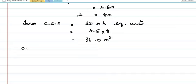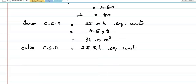Now let us find the outer curved surface area, which equals 2π capital R h square units. So 2π capital R is given as 4.6, into height given as 8. When I multiply: 8 into 6 is 48, carry 4; 8 fours are 32 plus 4 equals 36.8 meter square.